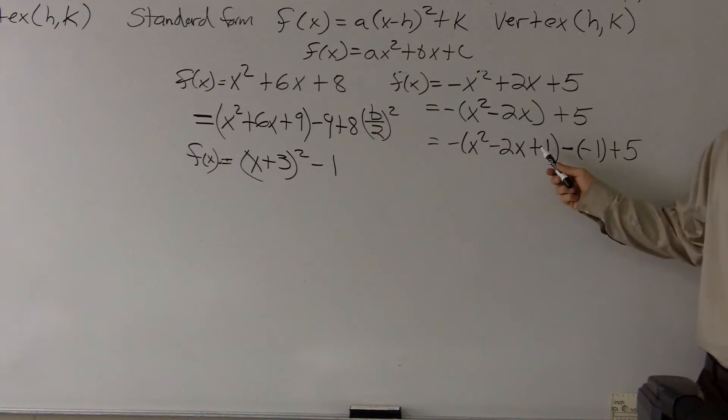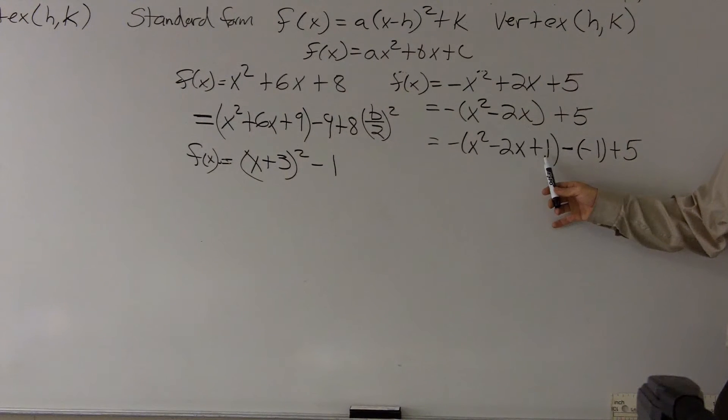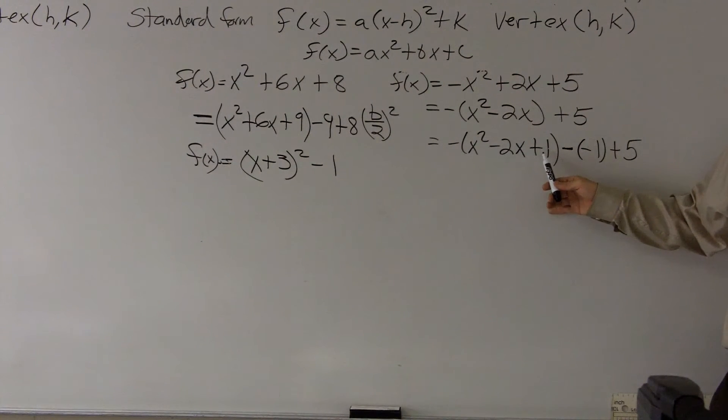I'll say this again. Here you say, oh, add 1 minus 1 to keep it even, but this actually isn't a positive 1. If I distribute this negative sign, this is actually a negative 1. So really what I need to do is, if this is a negative 1, that means I need to add.